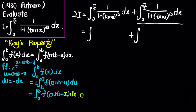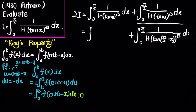For the second part, we apply the king's property. So it becomes the integral from 0 to π/2 of 1 over 1 plus tangent of (π/2 − x) to the power of square root of 2, times dx.